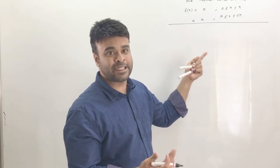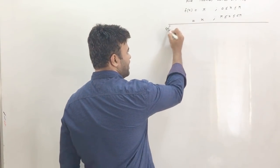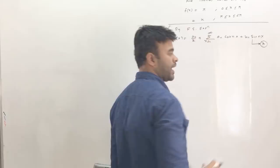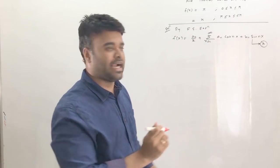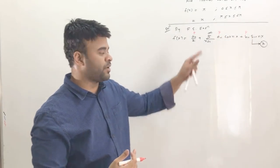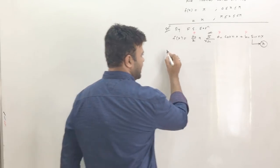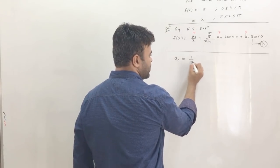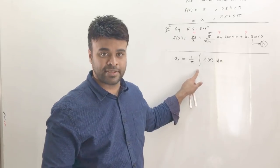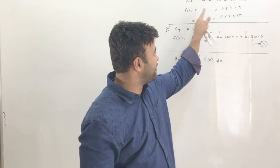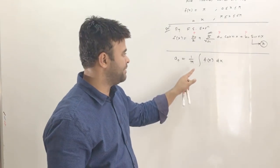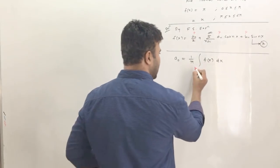Let's write down the Fourier series expression as expression A. We need to find a₀, aₙ, and bₙ one by one. For a₀, the formula is 1/π times the integral of f(x) dx. The limits of this integral are the full range of f(x), which is 0 to 2π.